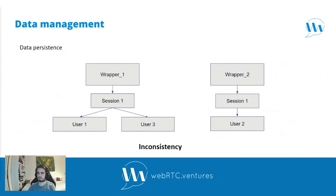Why do we need data persistence? Previously we had data stored in service memory, which makes it vulnerable to server failure — we wouldn't be able to retrieve the data if the server dropped. Furthermore, since each instance of a service, the wrapper for example, can process different requests of a session, the instances would have different data. There would be data inconsistency. We could have session one with three users connected but wrapper one would have two users and wrapper two only one, and we wouldn't be able to create the correct connections between users.